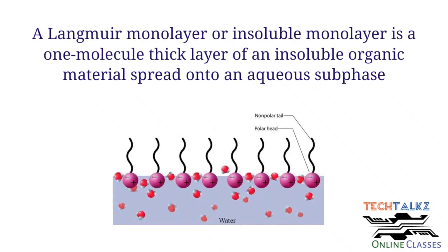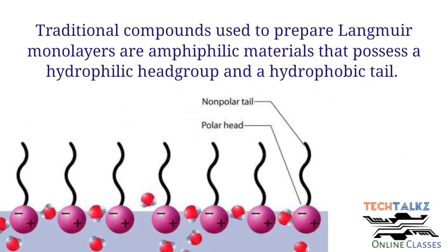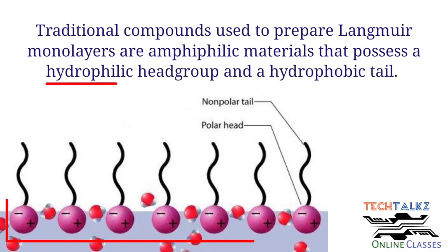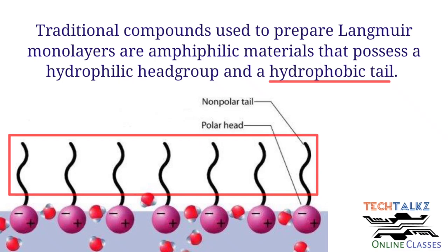A Langmuir monolayer is an insoluble monolayer — a one-molecule-thick layer of an insoluble organic material spread onto an aqueous surface. The compounds used to prepare Langmuir monolayers are amphiphilic materials, which have a hydrophilic head group and a hydrophobic tail. Hydrophilic means water-loving — attracted to water molecules. Hydrophobic means repelled by water molecules.